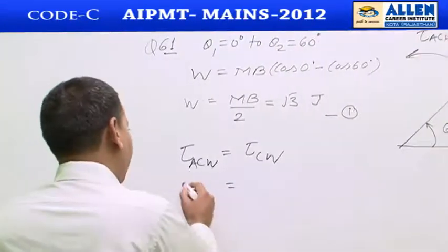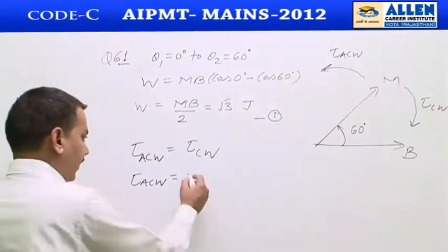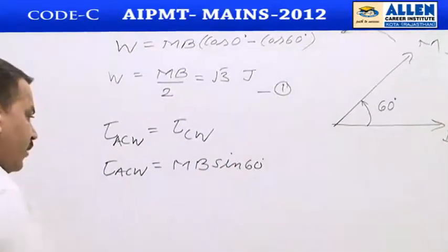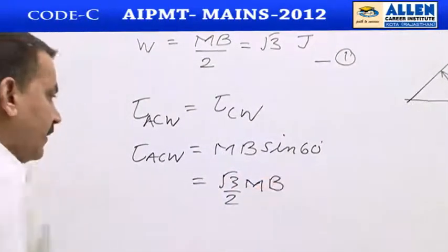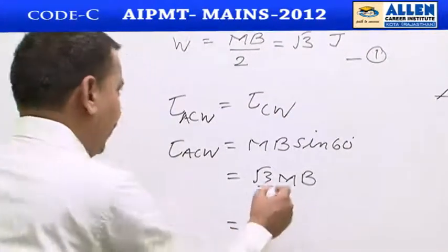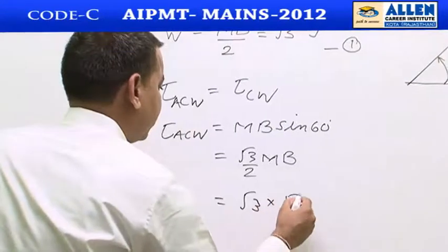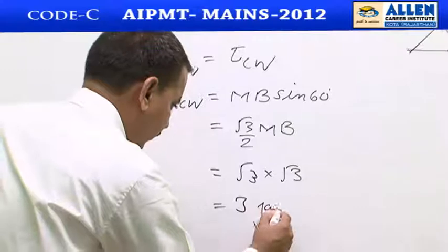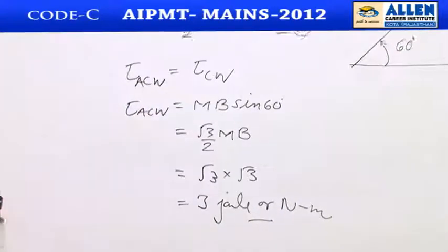To calculate the anti-clockwise mechanical torque, we calculate the clockwise magnetic torque, which is MB sin60° = MB × (√3/2). Using equation 1, MB/2 = √3, so MB = 2√3. Substituting: torque = 2√3 × (√3/2) = √3 × √3 = 3 joule or newton-meter. This is the final answer.